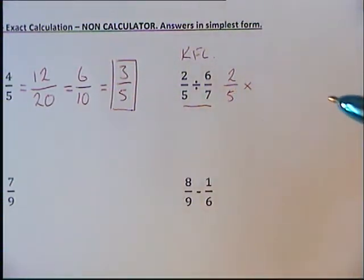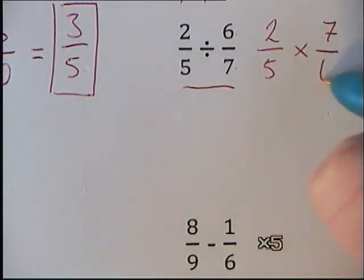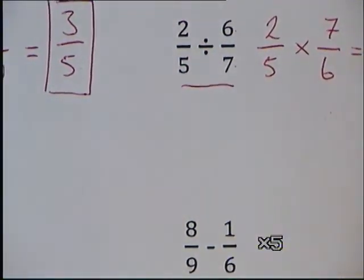Then we're going to change the sign to a times, and we're going to flip our second fraction so it's now 7 over 6, and then multiply out again.